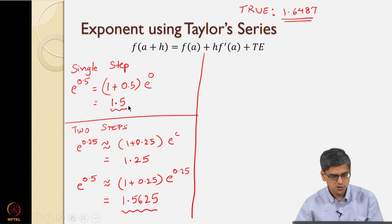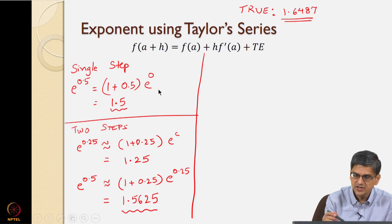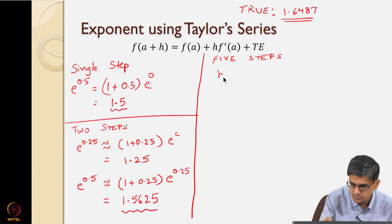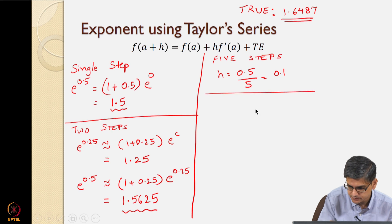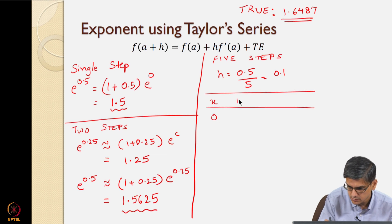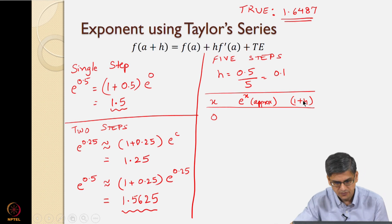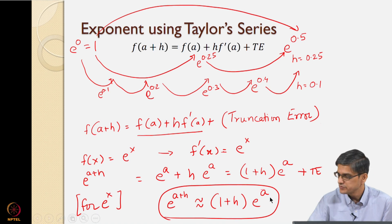If we use two steps instead of one, we have improved the solution — we are still not good enough but at least there is an improvement and we are going in the right direction. Now let us go in 5 steps. H is going to be equal to 0.5 divided by 5, which is 0.1. So let us make a table with the value of x and the approximate value of e to the power x.